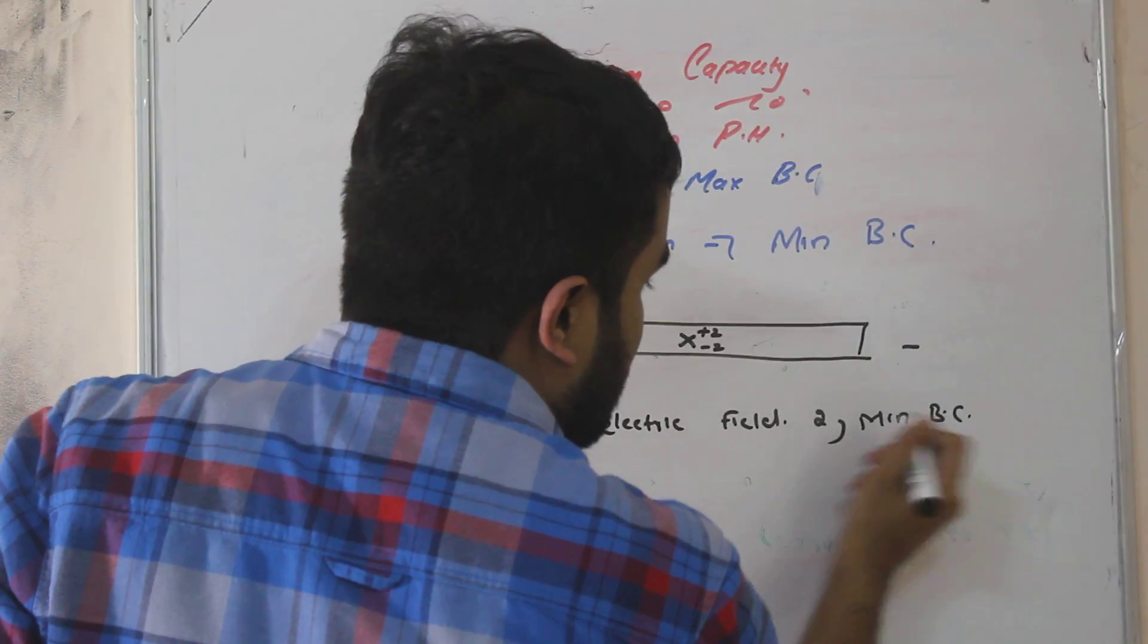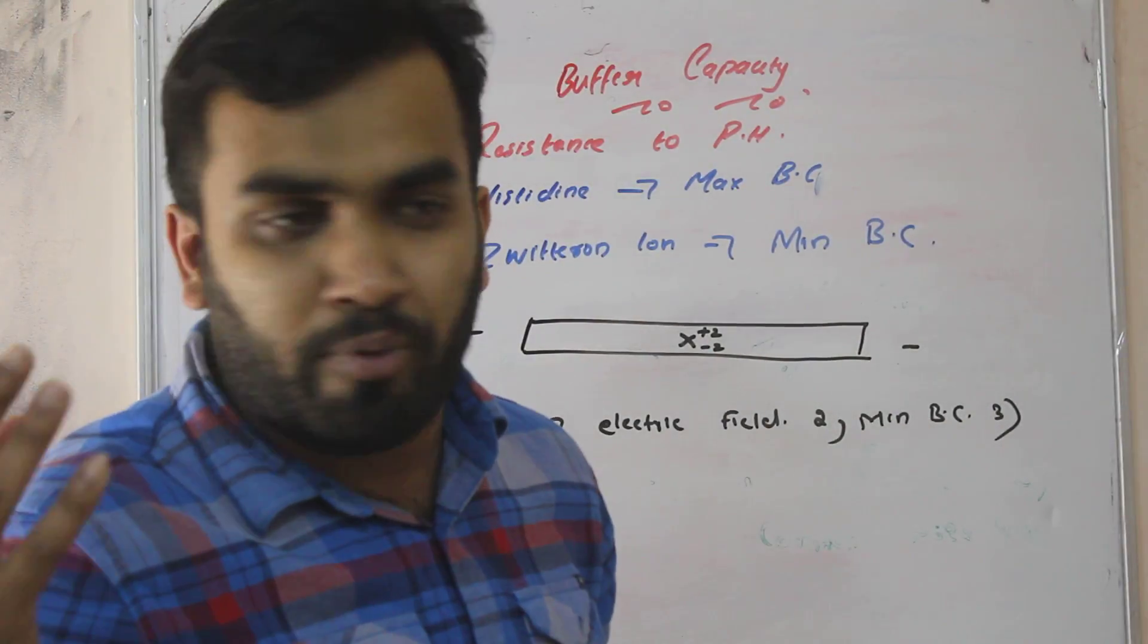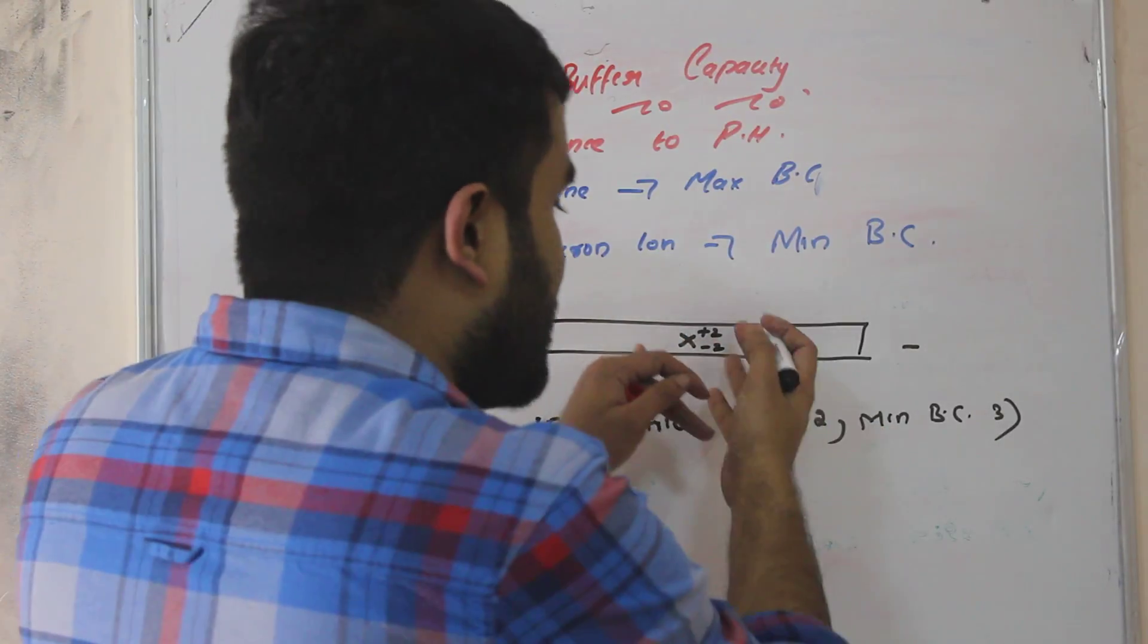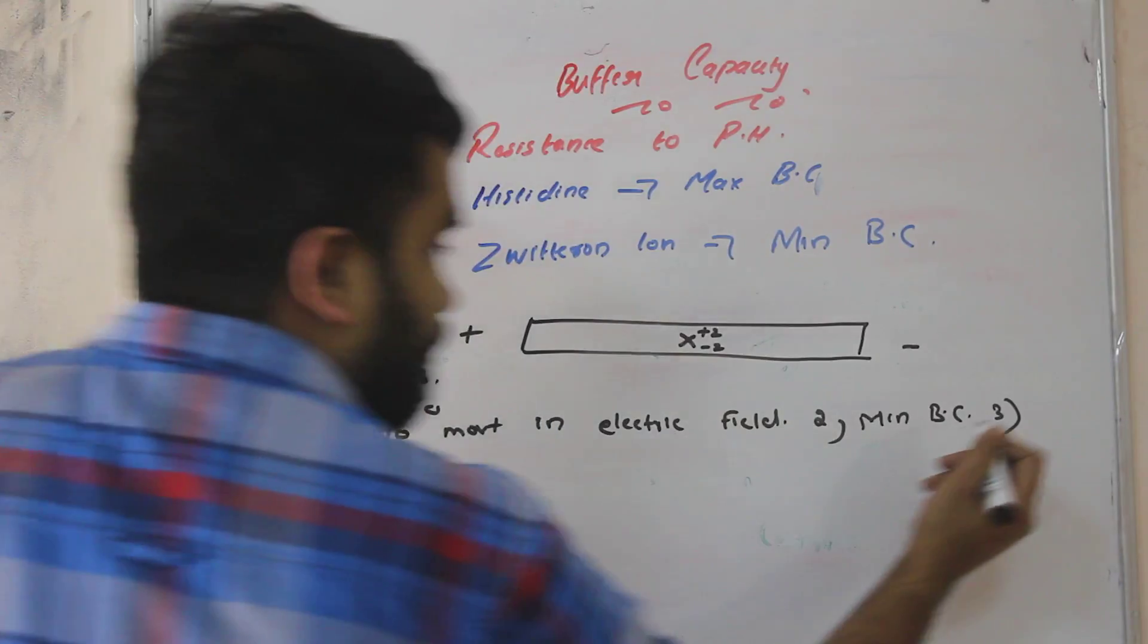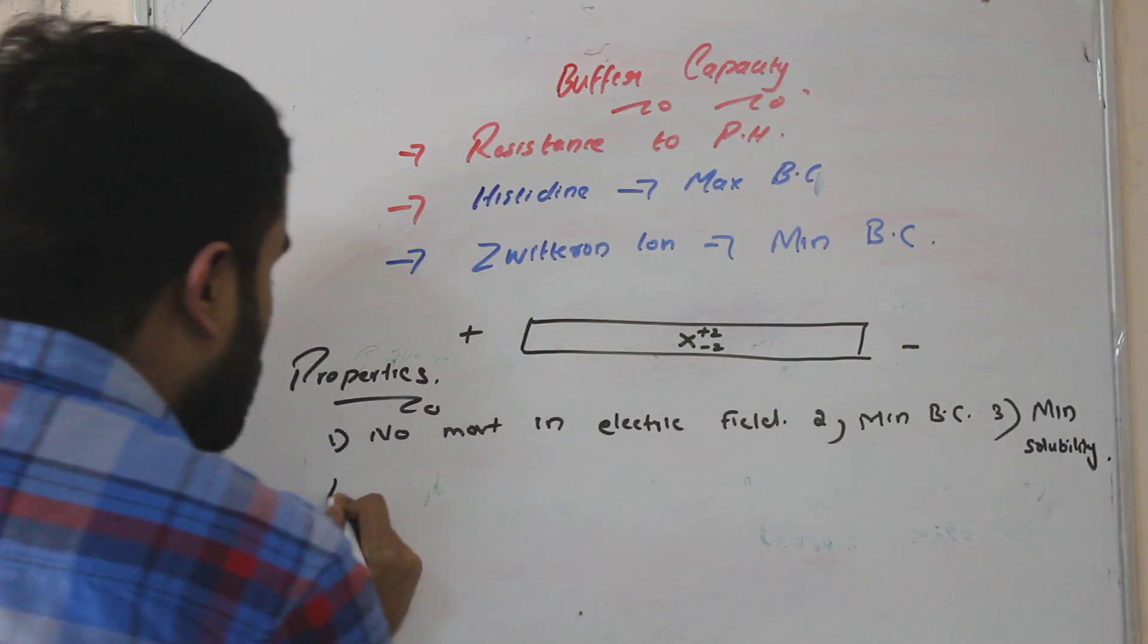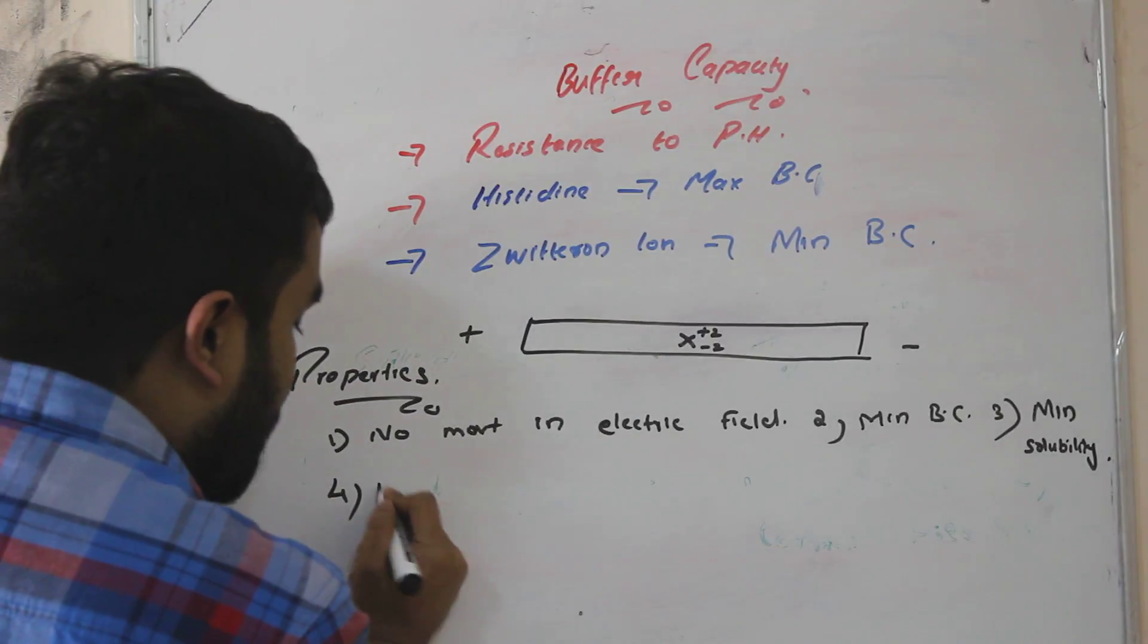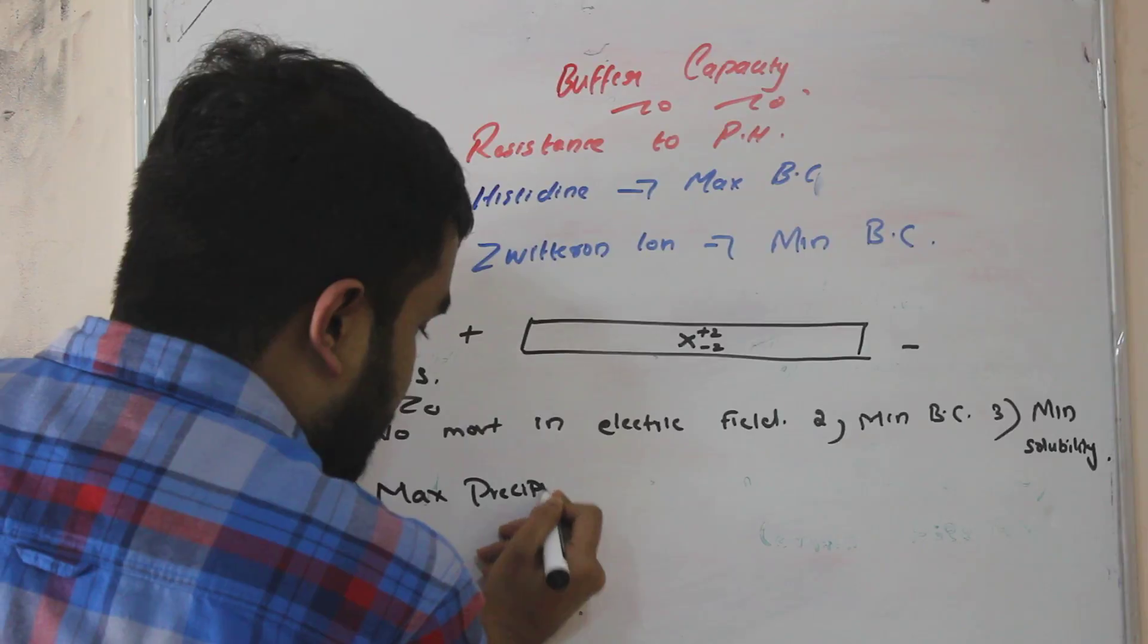Now what about the solubility? If you put the zwitterion in water, what about the solubility? Solubility will be maximum or minimum? Because it doesn't have any charge, so it will have minimum solubility. So if it is not soluble what it will do? It will precipitate, right? So it will have maximum precipitability.